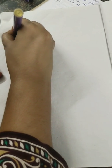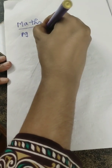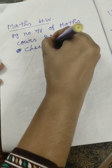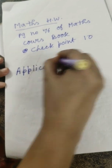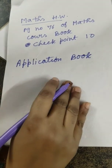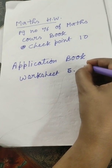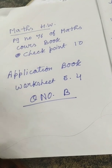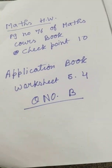Ma'am is going to give you homework in course book and application book. Maths homework: page number 76 of maths course book, checkpoint 10. And in application book, worksheet 5.4, question number B. You all will do this and be ready for your online classes. See you there. Bye bye!